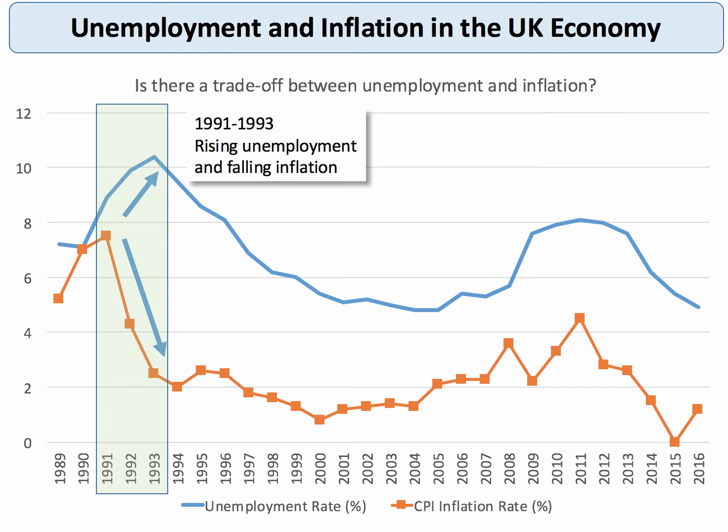Between 1991 and 1993, the UK economy was going through a difficult time. The rate of unemployment was increasing above 10%, whilst inflation was falling back from about 7% down to 2%. So there we seem to have a classic short-run Phillips curve situation, with rising unemployment leading to a deceleration in the rate of change of prices.